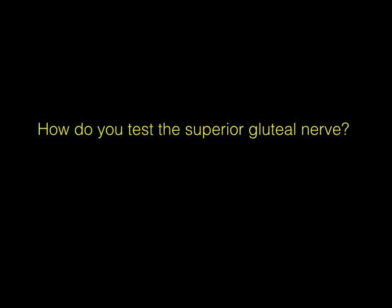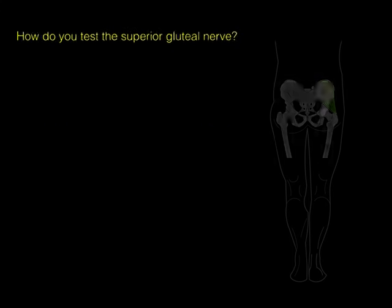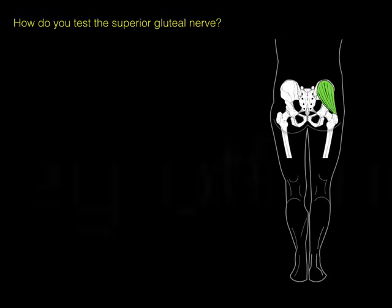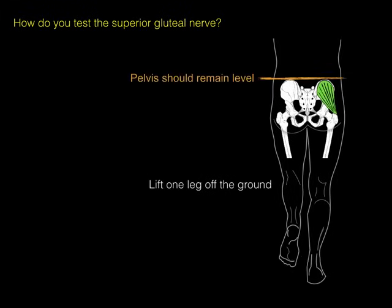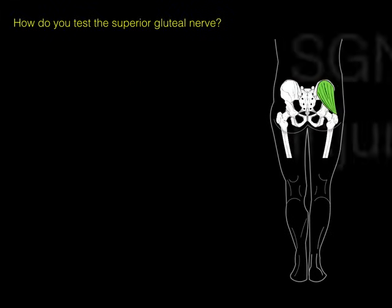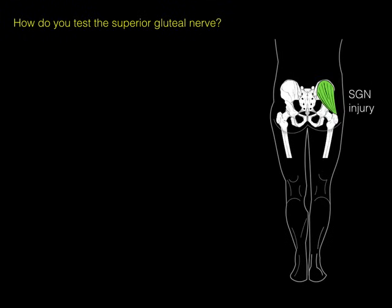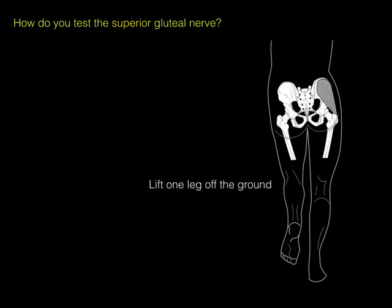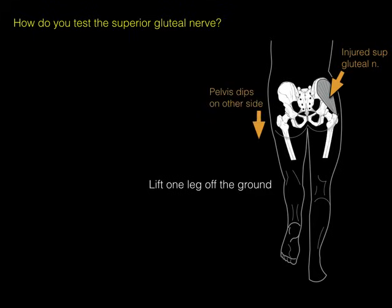Now, how do you test the superior gluteal nerve? When you lift one leg off the ground, the pelvis remains level because of the contraction of the gluteus medius, which is innervated by the superior gluteal nerve. If there is a superior gluteal nerve injury, that muscle is no longer functioning. When one leg is lifted off the ground, the pelvis dips because the gluteus medius, minimus, and TFL cannot contract to stabilize the pelvis — the pelvis dips on the other side.